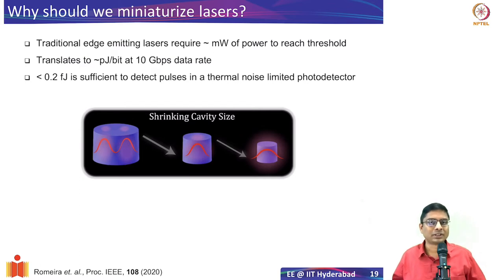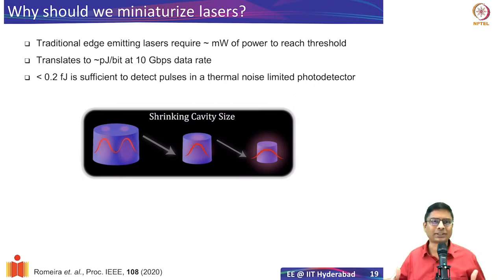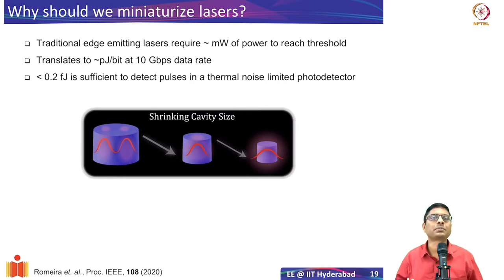What stops us from reducing the threshold? The reason the threshold is high is that lasers are substantially large — tens to hundreds of microns in size. When you have a large-area device, you have to create population inversion over all of that large active region, and so you have to expend that much energy. That's one reason why the threshold is large.